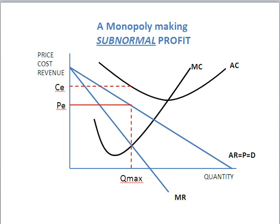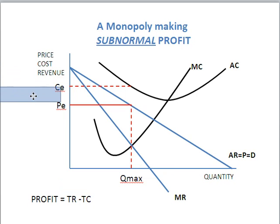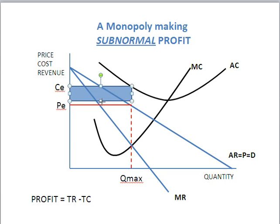We know that profit is represented by total revenue take away total costs. In this case, it looks like PE multiplied by QMAX — which is the total revenue — take away CE multiplied by QMAX — which is the total cost. The total costs are bigger than total revenue, so we're earning what we'd normally call a loss. But in economics, we describe this as a subnormal profit, and the area of subnormal profit is that area right here. And that is how you draw a subnormal profit.